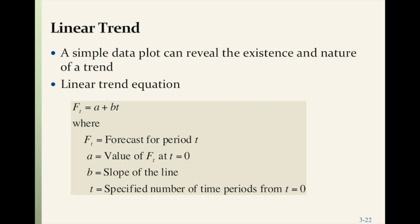The linear trend is where data can be plotted as a slope. The formula is F = A + BT, where A is the value at T equals zero, B is the slope of the line, and T is the specified number of time periods.